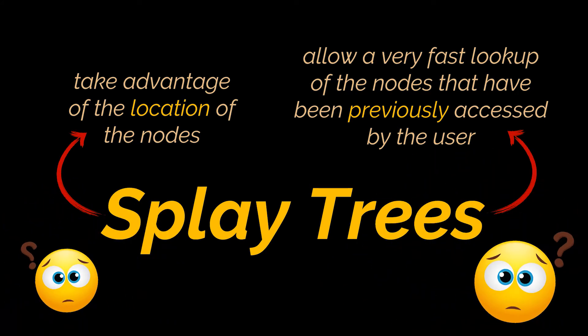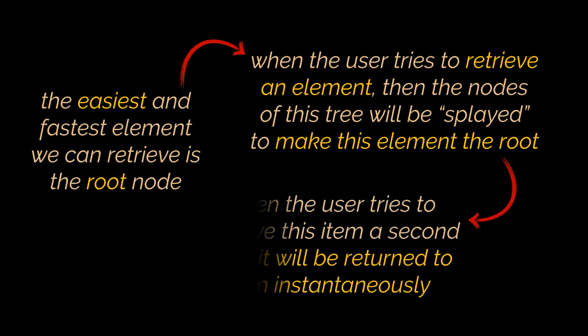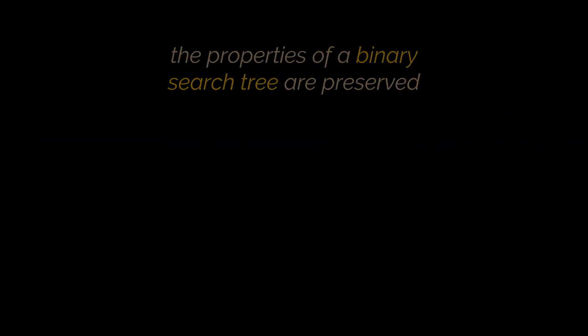But how do we know inside a tree that a certain element is to be accessed more frequently, and when we have this information, how do we make sure that element will be easier and faster to access in future lookups? The easiest and fastest element we can retrieve in any tree is the root node. So what splay trees do is when the user accesses or retrieves an element, the nodes are splayed to place that element at the root position — so the next time it's accessed, it's returned instantaneously.